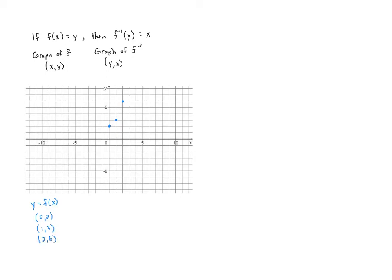Now, if we wanted to look at the inverse function and its graph, y equals f inverse of x, we know that for every point on the graph of f, there's a corresponding point on the graph of the inverse function but where the coordinates are swapped. So the inverse is going to contain 2 comma 0, 3 comma 1, and 6 comma 2.